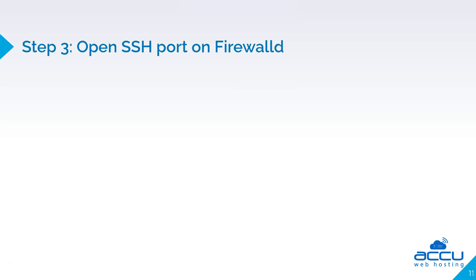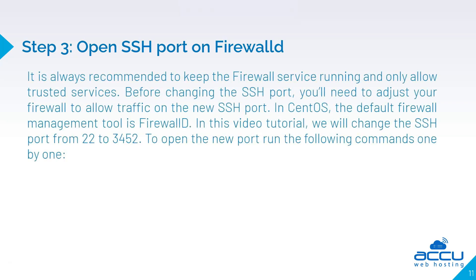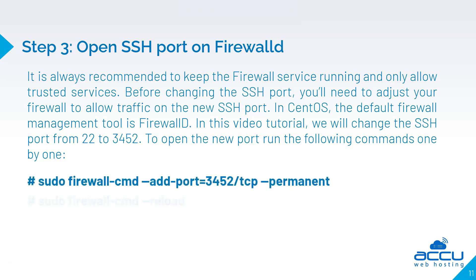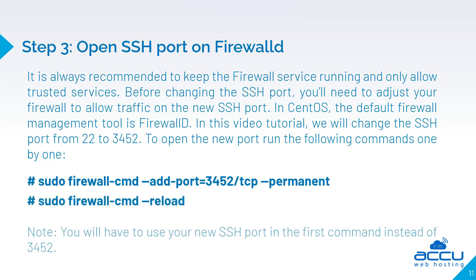Step 3 is to open the SSH port on the firewall. It is always recommended to keep the firewall service running and only allow trusted services. Before changing the SSH port, you will need to adjust your firewall to allow traffic on the new SSH port. In CentOS, the default firewall management tool is FirewallD. In this video tutorial, we will change the SSH port from 22 to 3452. To open the new port, run the following commands one by one. Note: you will have to use your new SSH port in the first command instead of 3452.